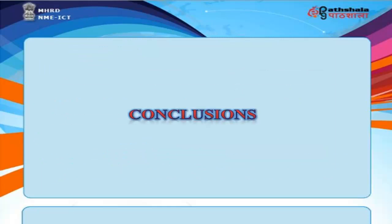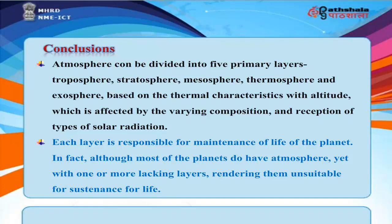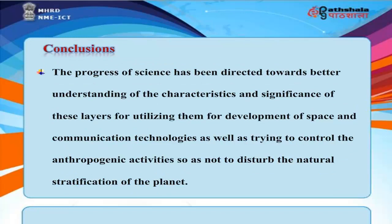Conclusions. The atmosphere can be divided into five primary levels — troposphere, stratosphere, mesosphere, thermosphere, and exosphere — based on thermal characteristics with altitude, which is affected by varying composition and reception of types of solar radiation. Each layer is responsible for the maintenance of life on the planet. Although most planets have atmospheres, some lack one or more layers, rendering them unsuitable for sustenance of life. The progress of science has been directed towards better understanding of these layers for development of space and communication technologies, as well as controlling anthropogenic activities so as not to disturb the natural stratification of the planet.